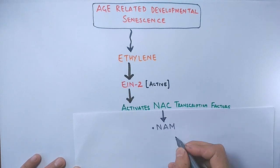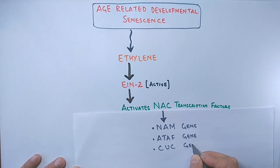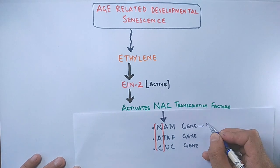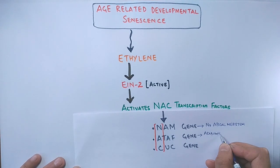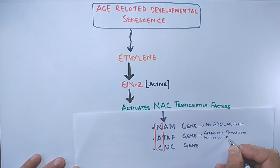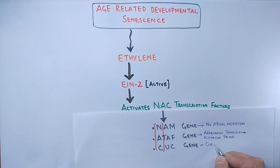First is the NAM gene, second one is ATAF gene, and third one is CUC gene. NAM stands for no apical meristem, ATAF stands for Arabidopsis transcription activating factor, and CUC is acronym for cup-shaped cotyledon.